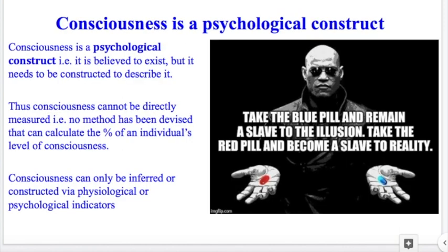Historically, psychologists and scientists balked at actually trying to define, describe, and measure consciousness — it was just too hard. In the modern world, we describe consciousness as a psychological construct. That is, we believe it to exist, but given we don't have any methodology that can reliably and validly measure it — and that's one of the issues with creating a continuum of consciousness — we need to construct it based on observations.